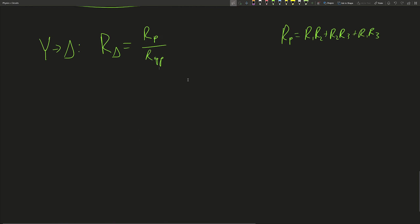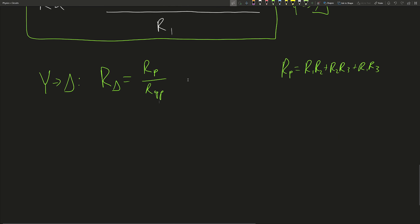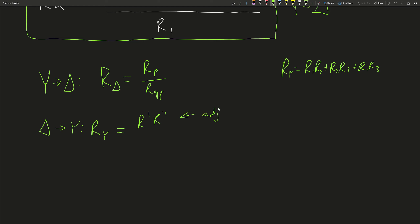With these two equations we have both transforms. For delta-to-Y: RY equals the product of adjacent delta resistors divided by the sum of all delta resistors. For Y-to-delta: R_delta equals the sum of products of all pairs of Y resistors divided by the opposite Y resistor.